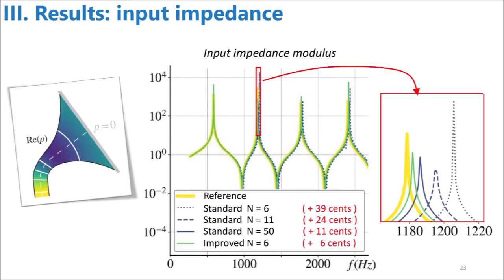Last but not least, we focus on a more practical illustration of the role of the supplementary mode. Indeed, we look at the input impedance that is computed with either the standard or the improved basis. As a reminder, the input impedance is often used to characterize the resonance frequencies of a wind instrument, so this is an interesting quantity to look at. If we zoom in on the first peak of the input impedance modulus, we can see that the improved basis is closer to the solution with only 6 modes than the standard basis with 50 modes, which is quite huge.